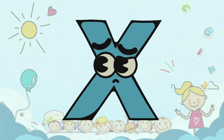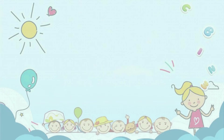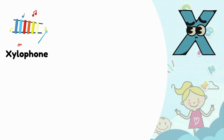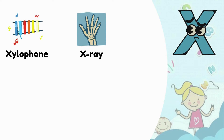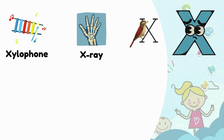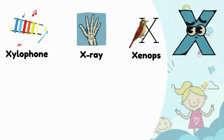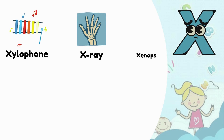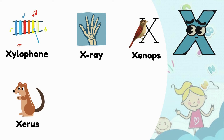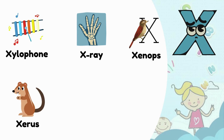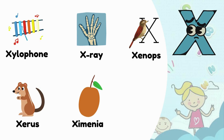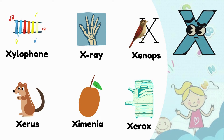X. X is for Xylophone. X is for X-ray. X is for Xenops. X is for Xyrus. X is for Xymenia. X is for Xerox.